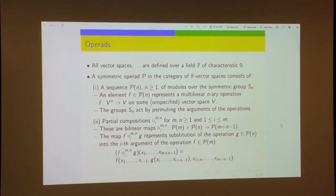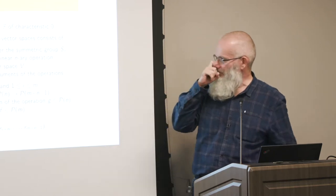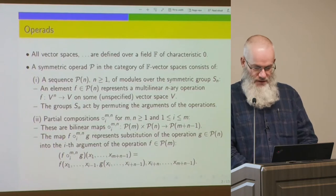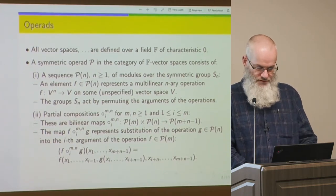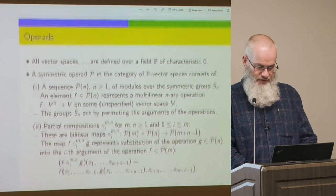There are some subtleties about how the action of the symmetric group should be compatible with the partial compositions. The technical term is that partial compositions need to be equivariant with respect to the action of the symmetric group. But if you do examples, it's fairly obvious from what you're used to with composition of multivariate functions.